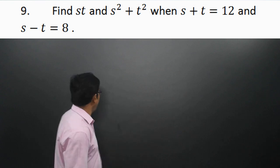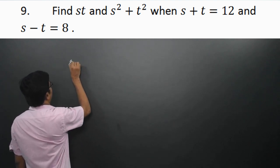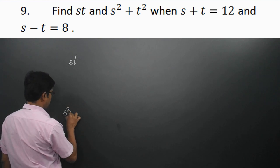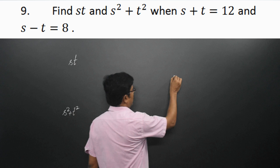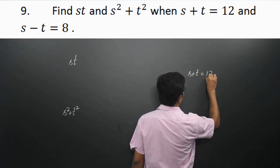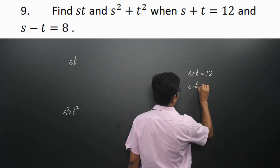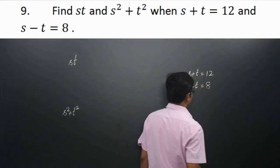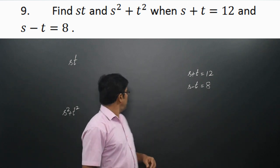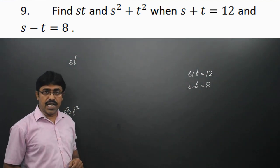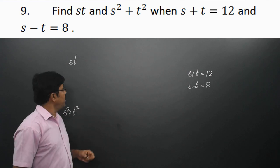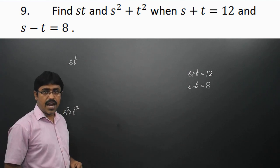In this problem, we are asked to find the value of st and s² + t², where s + t = 12 and s − t = 8. Like the previous problem, we can find the values without using identities, but I am leaving that for you. So I am finding the values using identities.